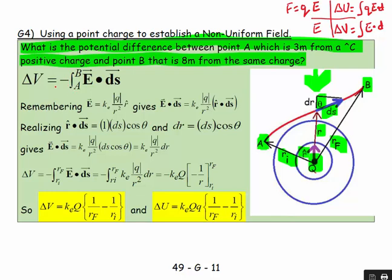I'll come back to the negative sign in a minute. Remembering that E equals keQ over r² times r̂, then E dot ds becomes keQ over r² times r̂ dotted with ds. Now I need to deal with this dot product.